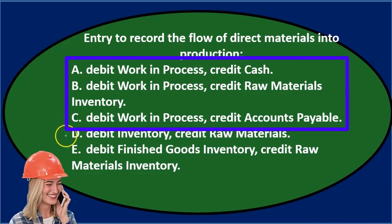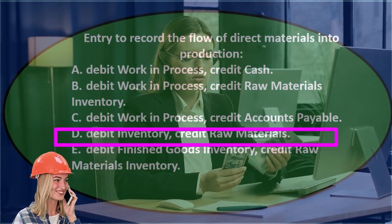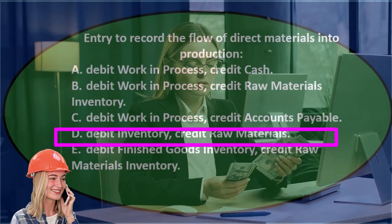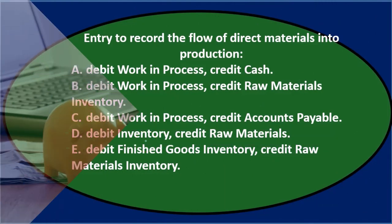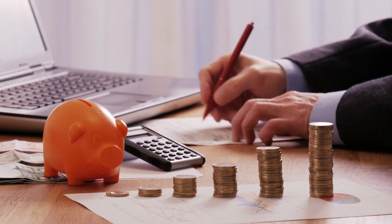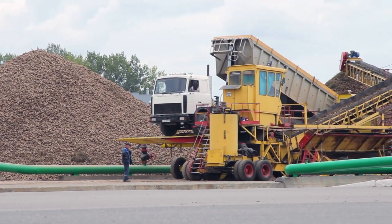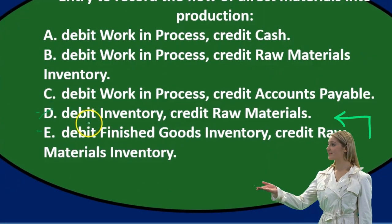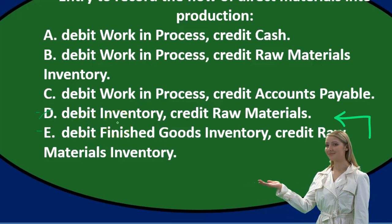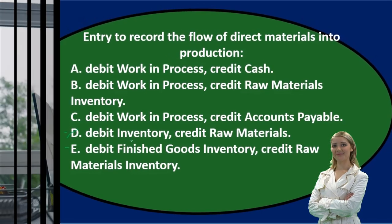Just to double check — if we look at D, debit inventory, that's a vague answer because when we're in a production process there are different kinds of inventory. It's either materials, work in process, or finished goods inventory. Debiting just 'inventory' is not really a detailed account. It doesn't tell us what the account actually is because there are three components of inventory.